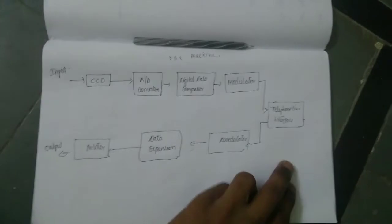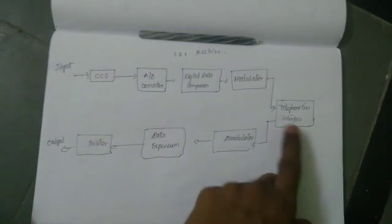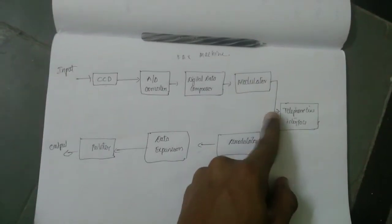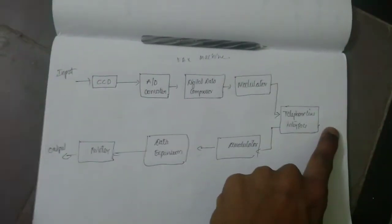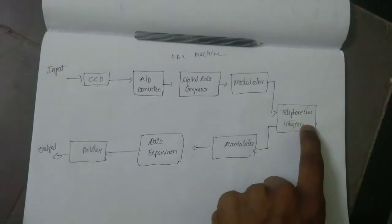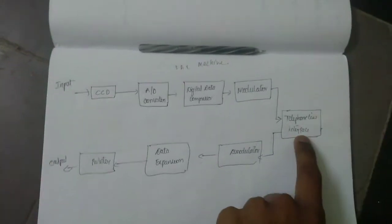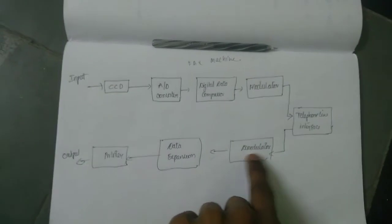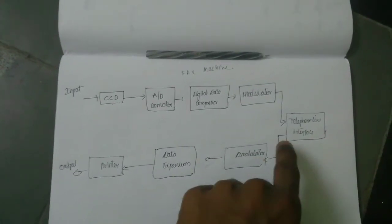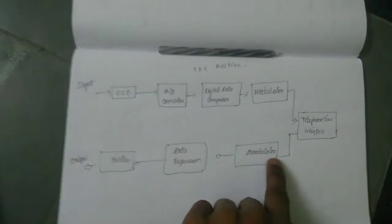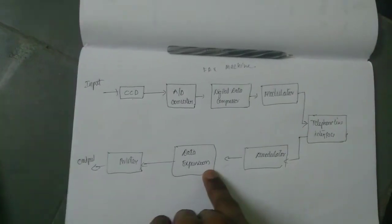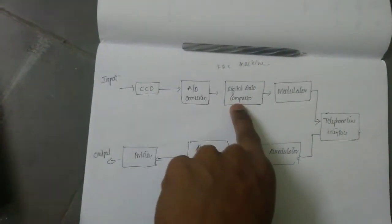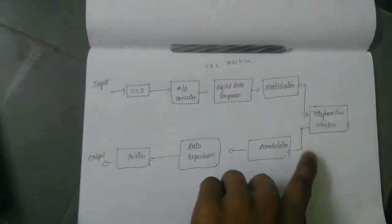This is the transmission and receiving part. On the receiving side, the signal comes from the telephone line through the demodulator. The demodulator demodulates the signal. Then the data expansion block expands the compressed data.